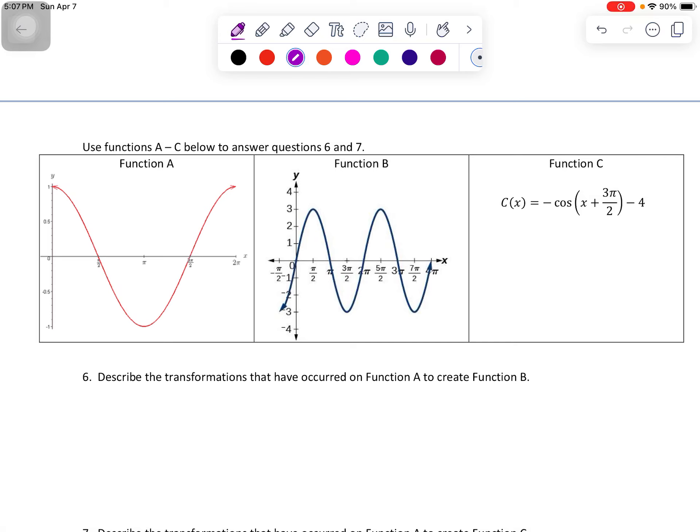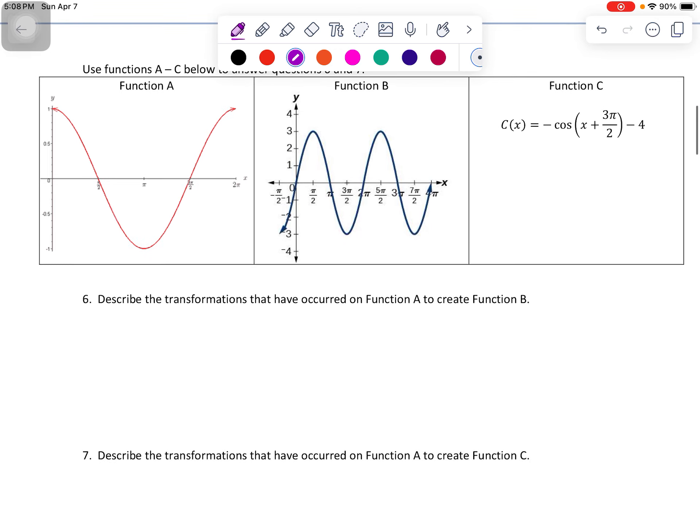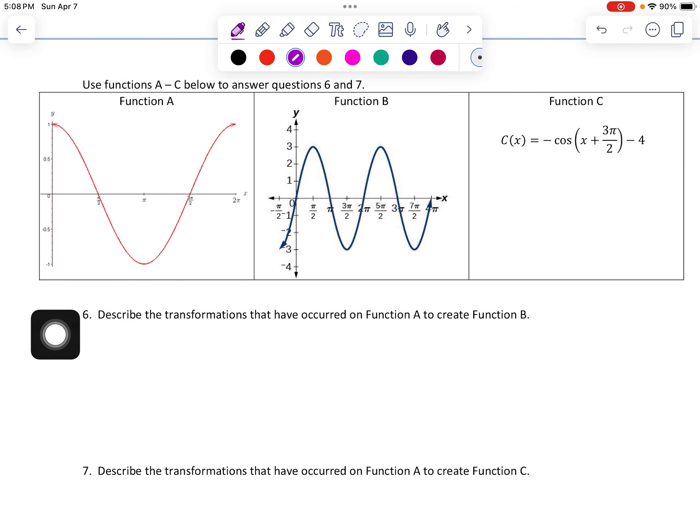Alright, let's start page 2 of the Unit 7 Study Guide. In question 6 and question 7, you're asked to look at the functions that are given above, so function A, B, and C. So, question number 6, you need to convert function A and create function B.